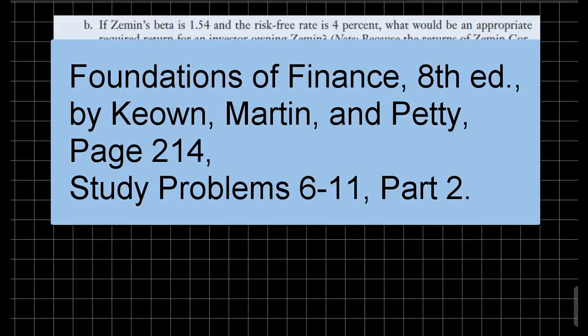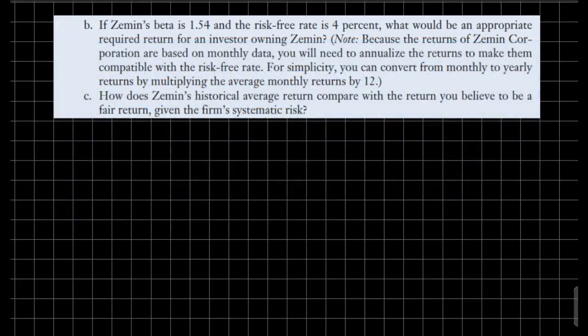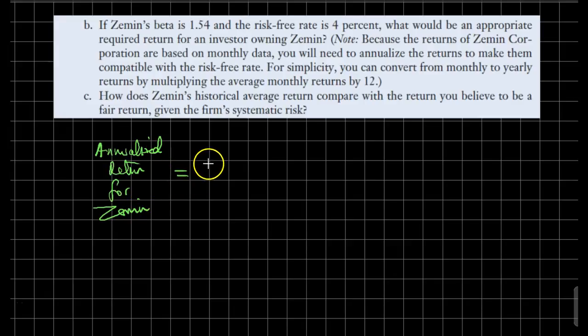We are back for the second part of our problem for column 6-11. We already have a good idea about the annualized return for Zemin. Let me remind you of what we got earlier: the annualized return for Zemin was 20% versus the annualized return for the market.